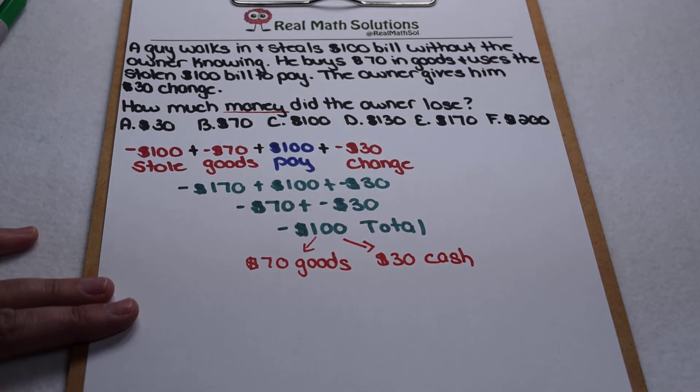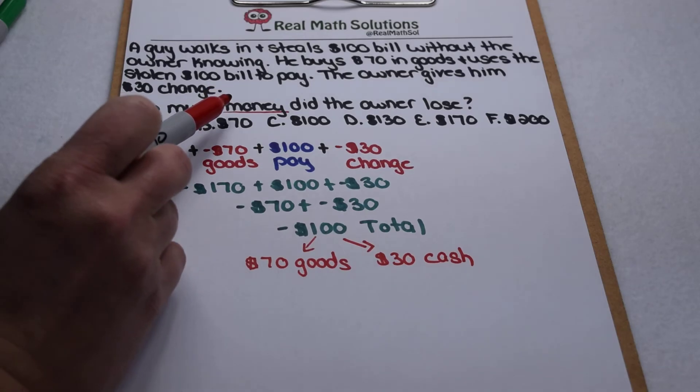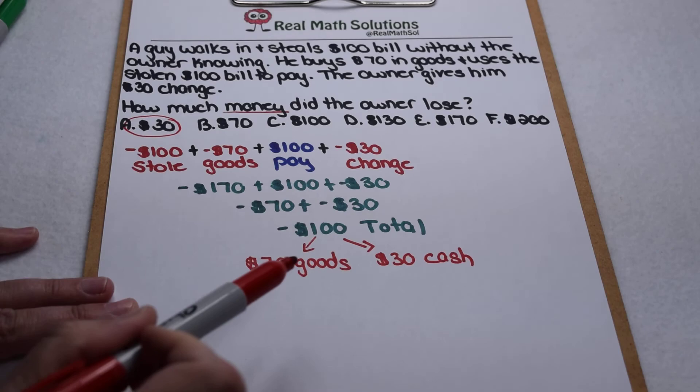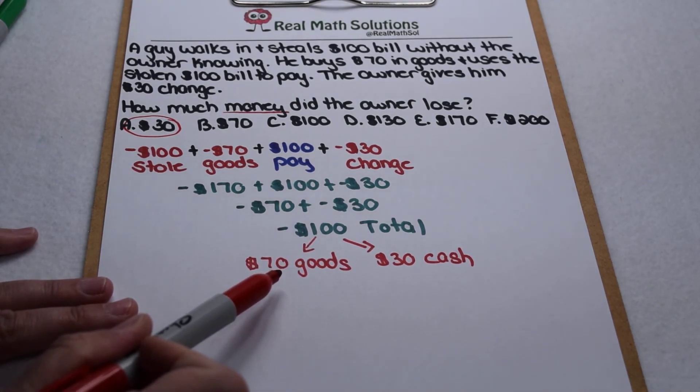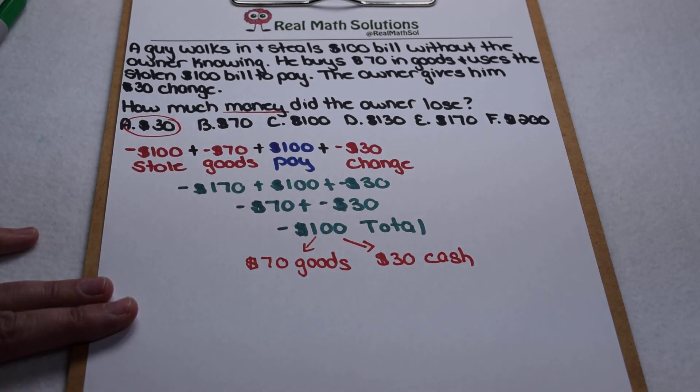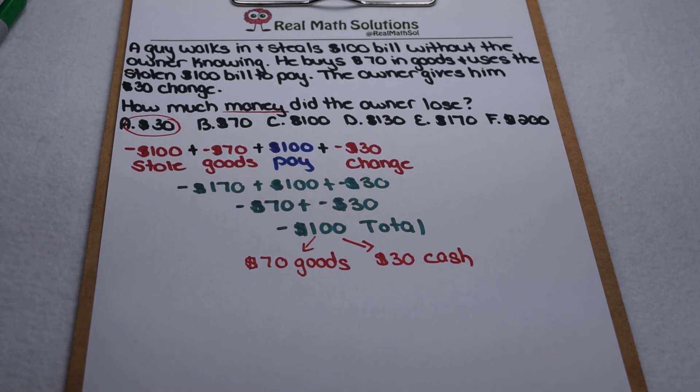So in our opinion, if the question specifically asks how much money did the owner lose, we're going to go with $30 cash because the other $70 is in goods and the original $100 bill that was stolen is now back in the owner's possession.